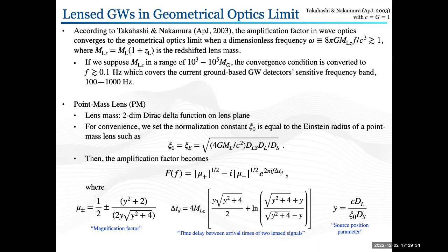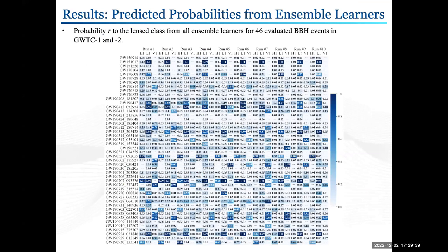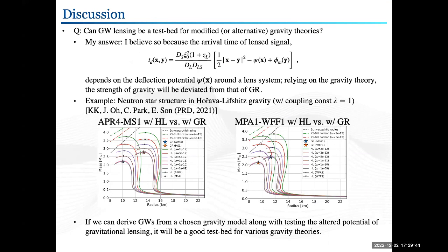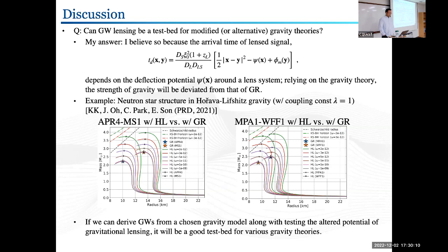Another question concerned the neutron star mass-radius plot for Horava-Lifshitz gravity shown in the last slide — specifically, what is the current experimental status? The questioner noted the upper bound on neutron star mass may be marginal relative to the GR limit. The speaker acknowledged being not an expert in that field and having no updates on the current experimental status.